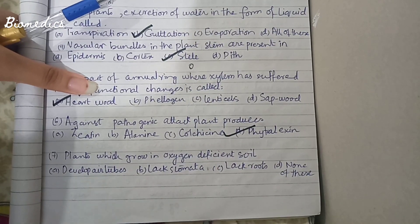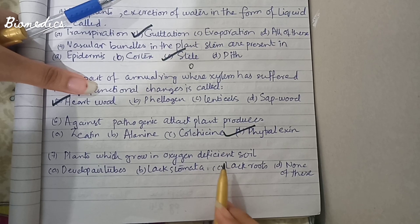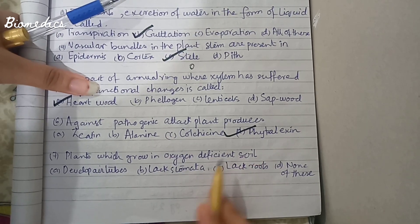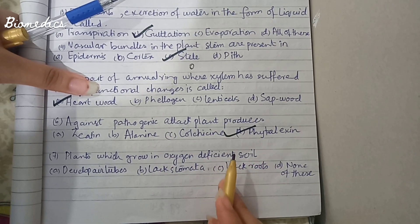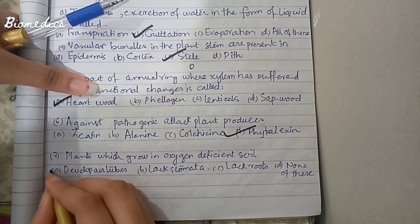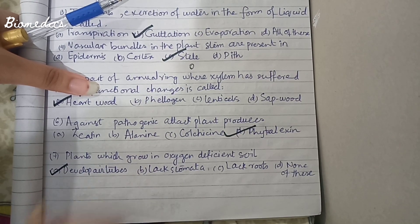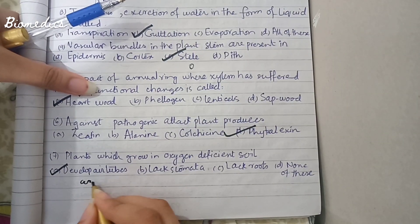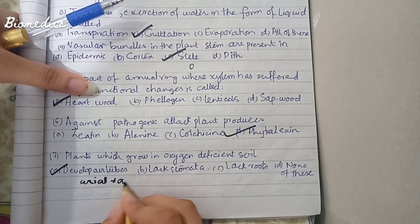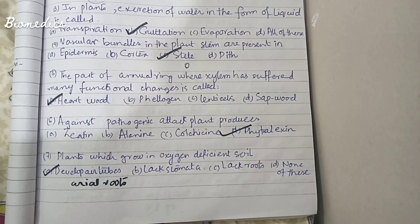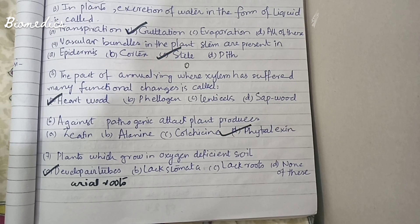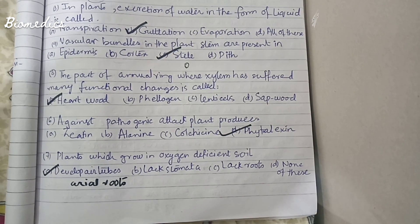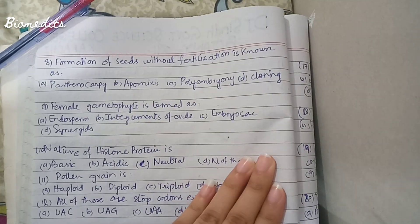Plants which grow in oxygen-deficient soil have two adaptations: one is developing air tubes (aerenchyma), and the other is developing aerial roots (pneumatophores). Remember there are two key adaptations for plants under oxygen-deficient or waterlogged soil conditions, related to plant stress responses.